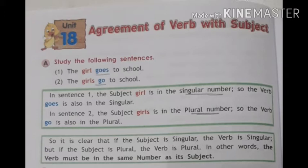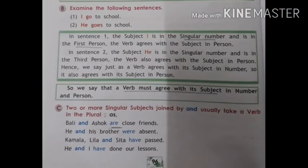So there is agreement of the subject with its verb. It is clear that if the subject is singular, the verb is singular, but if the subject is plural, the verb is plural. In other words, the verb must be in the same number as its subject. In this example we know there is agreement between the subject as well as its verb.